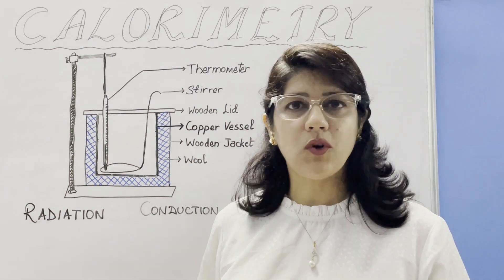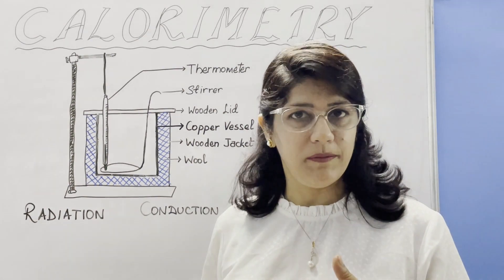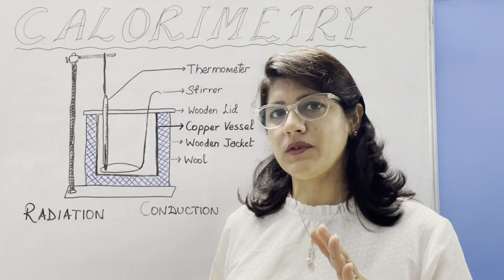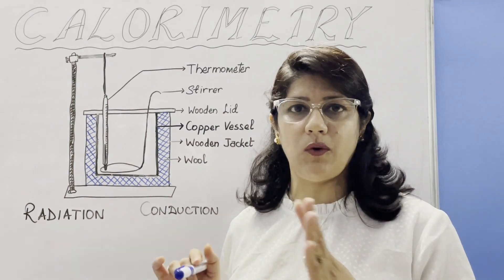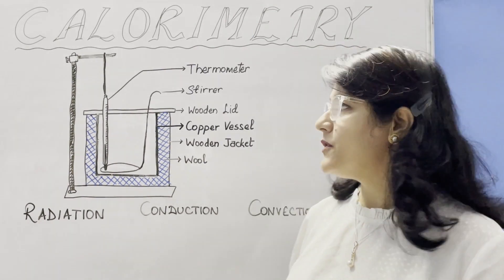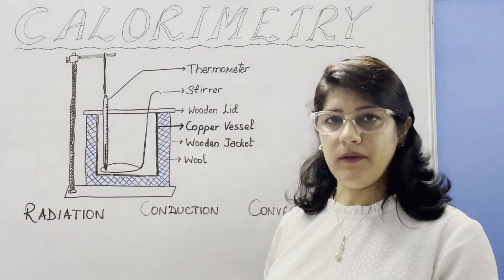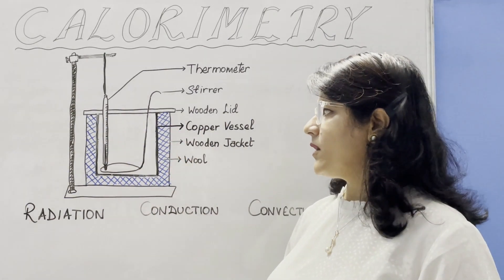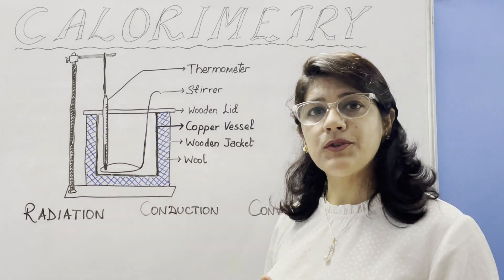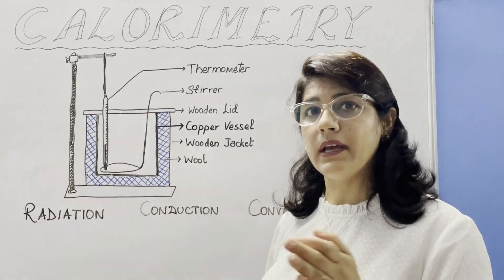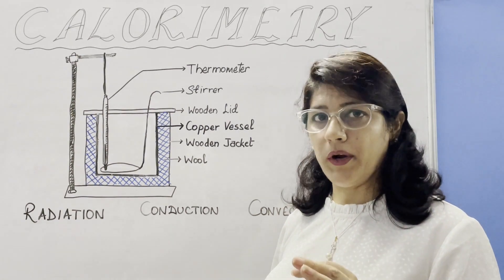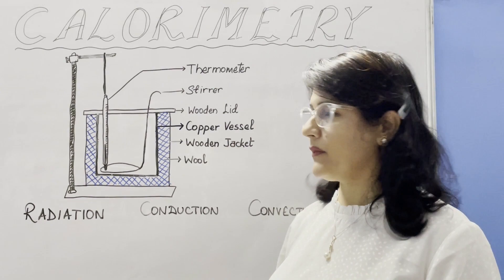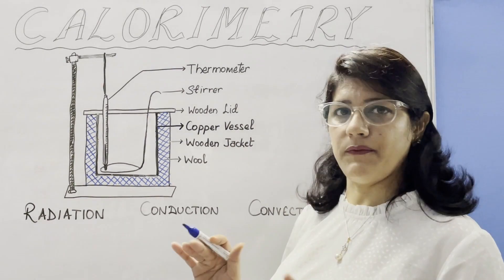Another important topic is the calorimeter. We are going to discuss 6 small questions related to this topic. First is the definition of a calorimeter: it is a cylindrical vessel used to measure the amount of heat gained or lost by a body when kept in contact with another body.